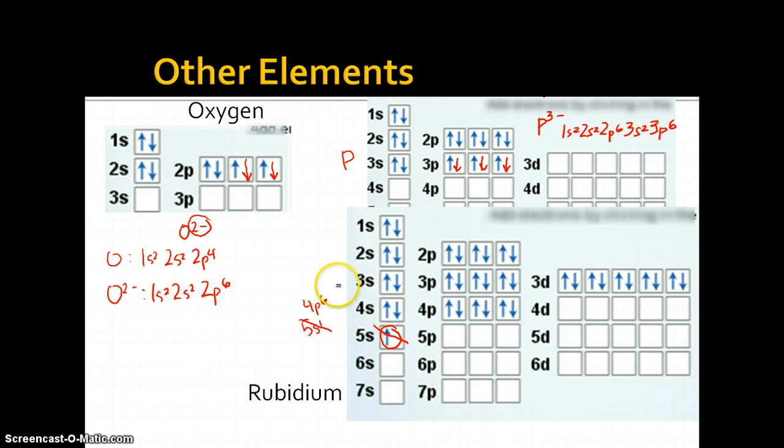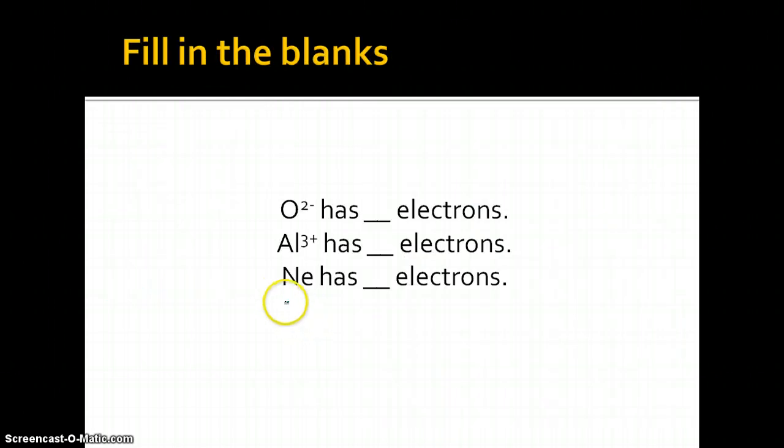So that's how we figure out the electron configuration of an ion. You see how many electrons were added or taken away, and you either add electrons or you take them away from the electron configuration. Now, let's think about this.